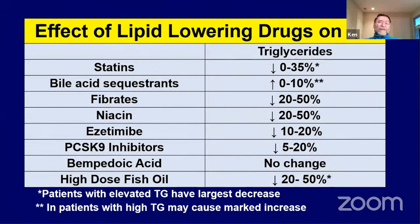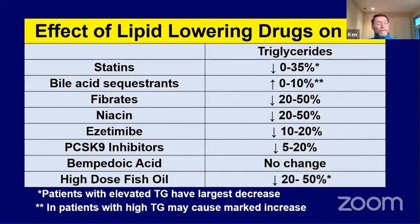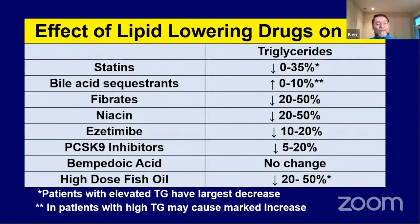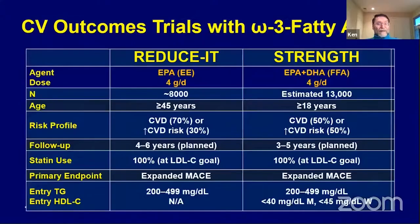Regarding drugs: statins are effective at lowering triglycerides in patients with elevated levels, making them a reasonable choice for mixed lipid profiles. Bile acid sequestrants must be used cautiously because if triglycerides are already high, they may raise them further. Fibrates and niacin are specifically triglyceride-lowering drugs and are very effective. Ezetimibe, similar to statins, lowers triglycerides modestly, as do PCSK9 inhibitors. Bempedoic acid doesn't really change triglycerides. Fish oil at low doses — one gram per day — has little effect, but at three to four grams per day, it is very effective at lowering triglycerides.